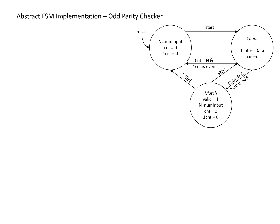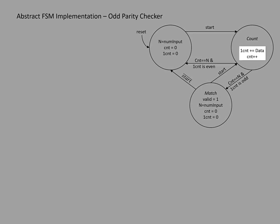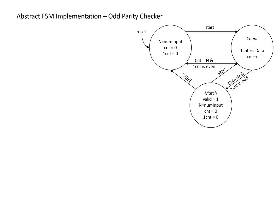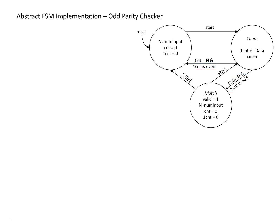Looking at the FSM, we can see there is a counter — one counter incrementing in every case in the count state, and another conditionally incrementing depending on the value of data. We also need to look at the value of count and compare it to some other value n. This value n is set within certain states, so we're going to need a register to hold n, and finally we need to determine whether the one-count value is odd or even.